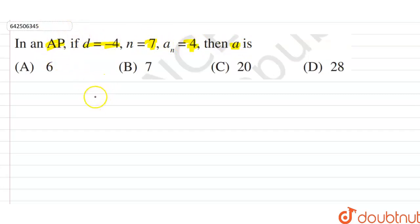So the formula for calculating the nth term is An is equal to A plus N minus 1 into D, where An is the nth term.